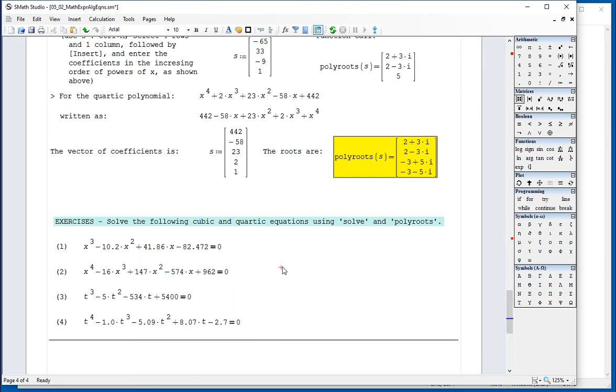And so what you have to do is create your vector. I've been calling it s, but you can call it anything like v, column. And this one has two, three, four, five elements. So I'll use control M, and put five rows in one column, insert.